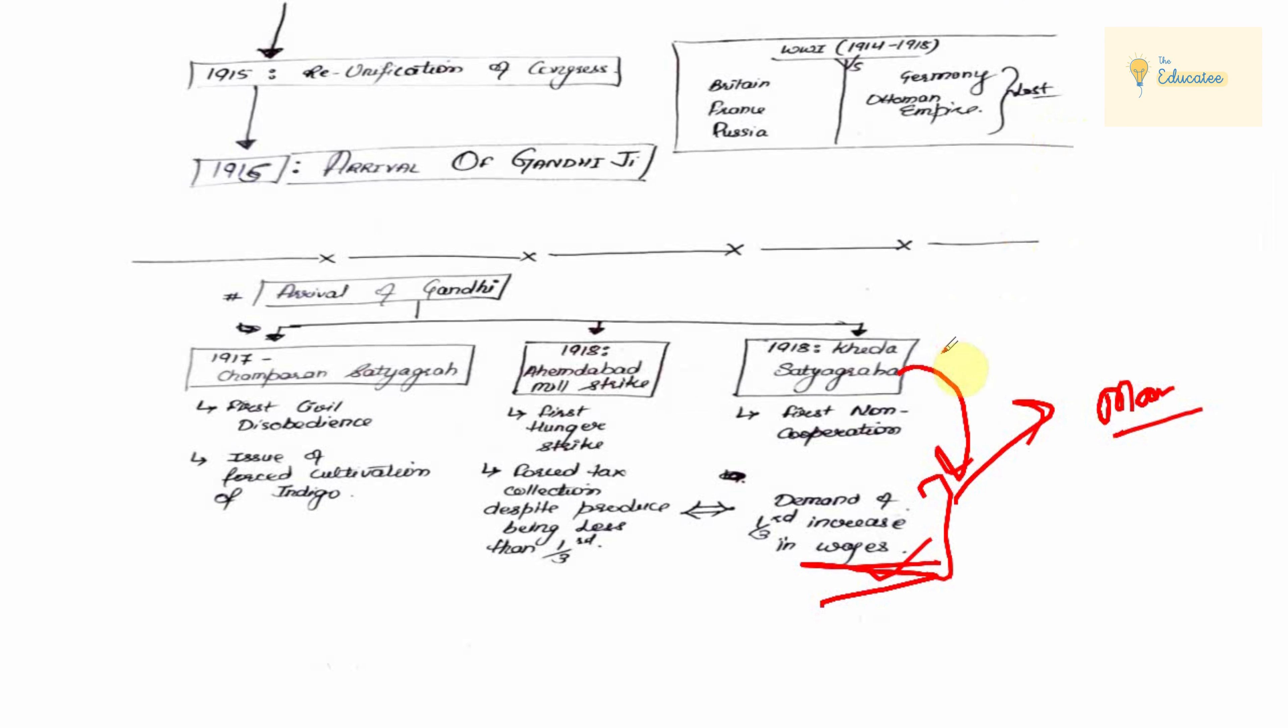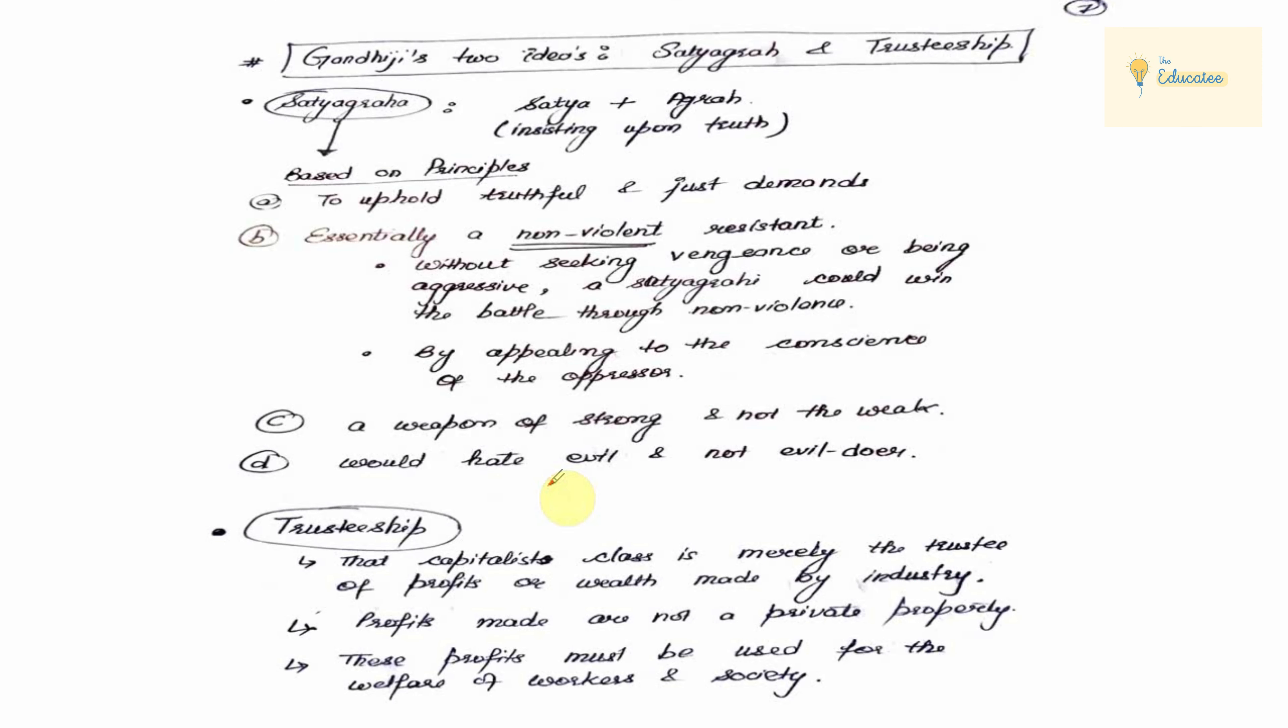These three things were very important. Now the most important thing is what is Satyagraha? We had a lot of Satyagraha, but what is the idea of Satyagraha? This is very important. Gandhi Ji's two ideas: Satyagraha and Trusteeship. We read these two in detail.